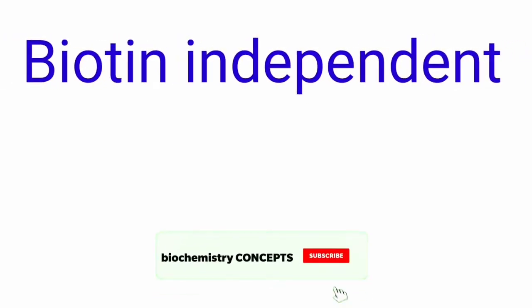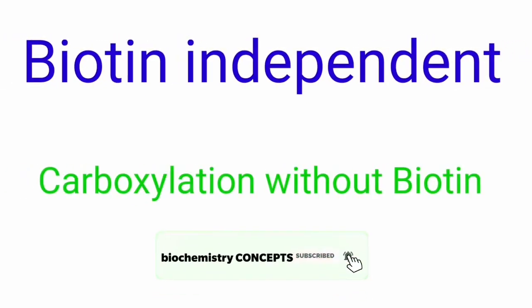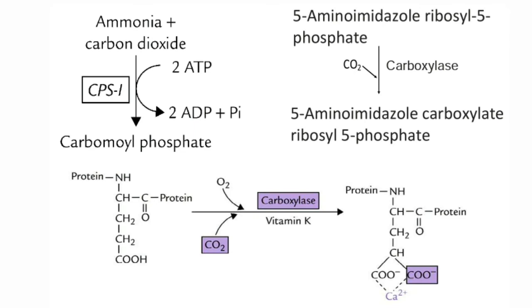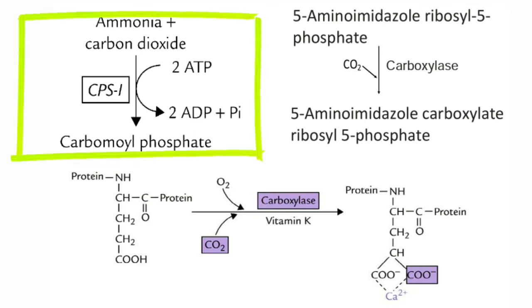Now coming to biotin-independent carboxylation reactions — these are reactions where biotin is not required. The first example is the conversion of ammonia and carbon dioxide to carbamyl phosphate. This is the first reaction in the urea cycle, and here biotin is not required for this carboxylation reaction.